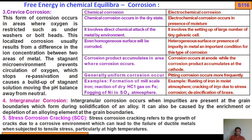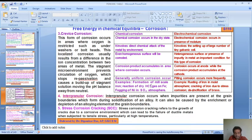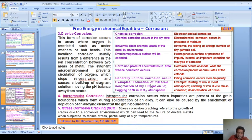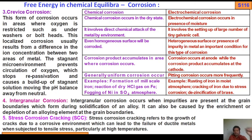Examples of chemical corrosion: formation of mill scale on iron, reaction of dry HCl, fogging of nickel in SO2 atmosphere. Examples of electrochemical corrosion: rusting of iron in moist atmosphere, cracking of iron due to stress corrosion, de-zincification of brass, etc. These are important examples of both chemical corrosion and electrochemical corrosion.